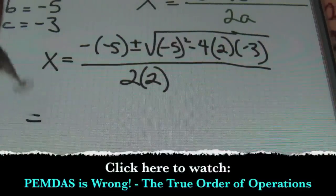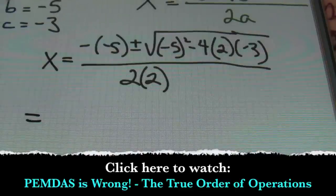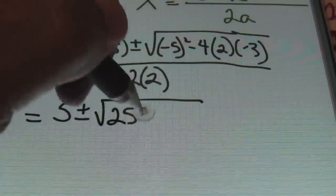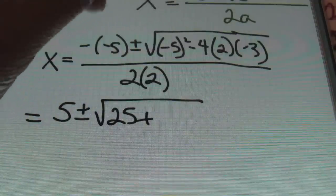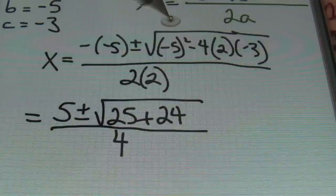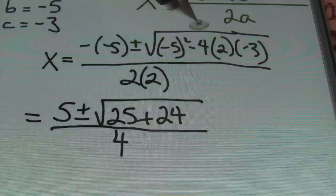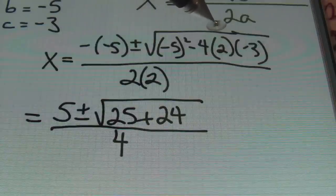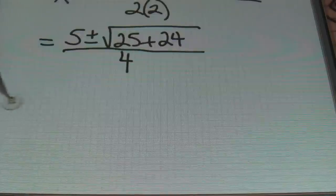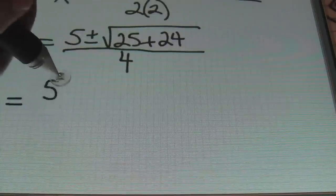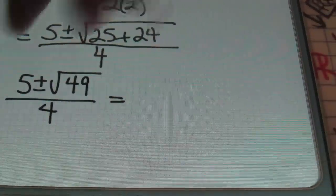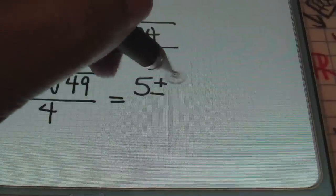Check out our PEMDAS video if you have a chance. Simplifying: negative negative 5 is positive 5, plus or minus the square root of 5 squared is 25, plus 4 times 2 times 3 gives positive 24, all over 4. Negative 5 squared is positive 25, and negative 4 times 2 is negative 8; negative 8 times negative 3 is positive 24. Simplifying further under the radical: 25 plus 24 is 49. So we have 5 plus or minus the square root of 49 is 7, all over 4.